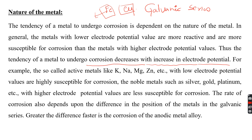Metals such as gold, silver, and platinum are less susceptible for corrosion. However, there are few exceptions, as some metals may show the property of passivity. Also, the rate of corrosion depends upon the difference in their position in the galvanic series — the greater the difference, the faster is the corrosion of the anodic metal.